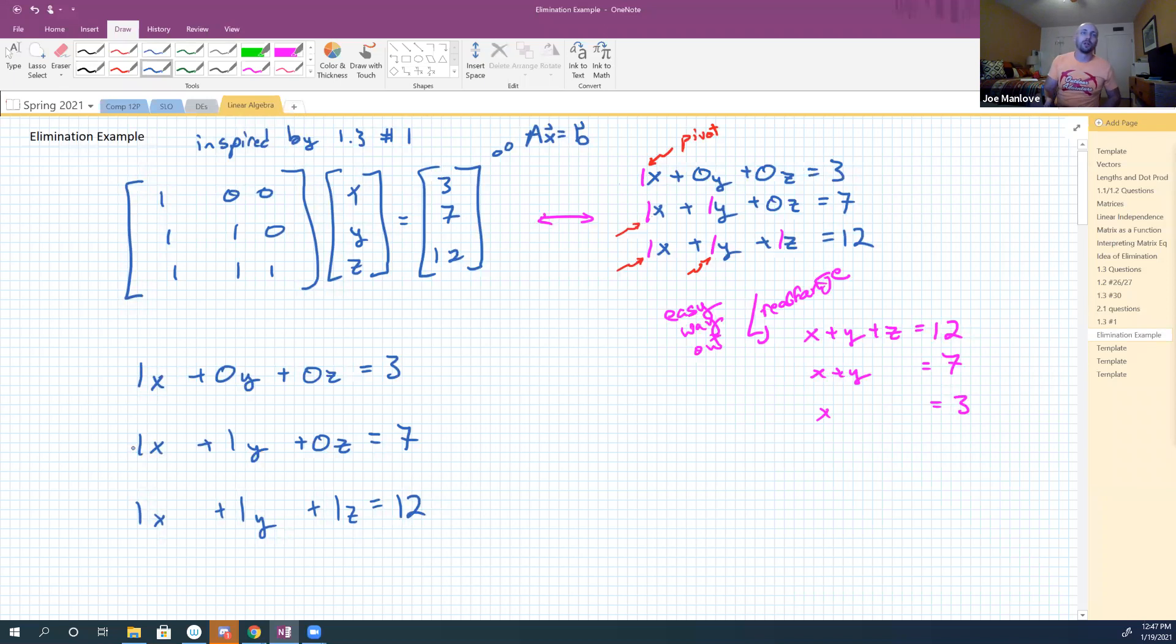Okay, so now my goal is to get rid of this one here. So I would like to take this first row, multiply it by something, and add it to the second row in order to see this one go away. You guys all with me on that thought?